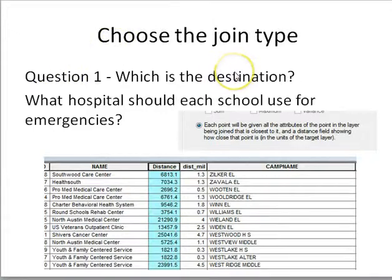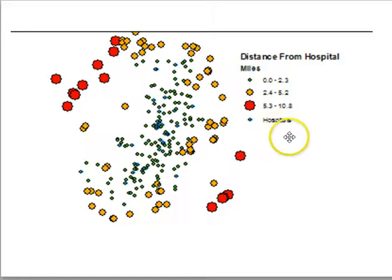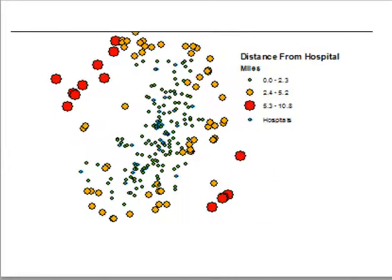Once I determine the direction, I map the result. Each school gets a distance field plus the name of the closest hospital, and I can visualize it by mapping the distance data.